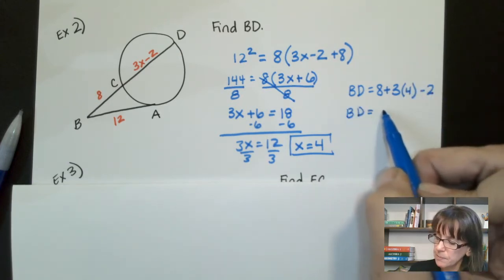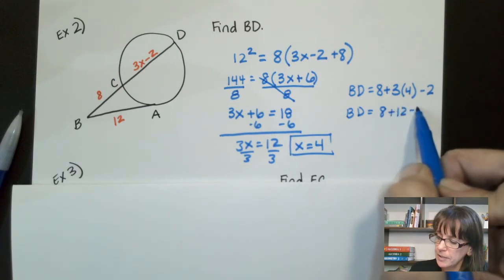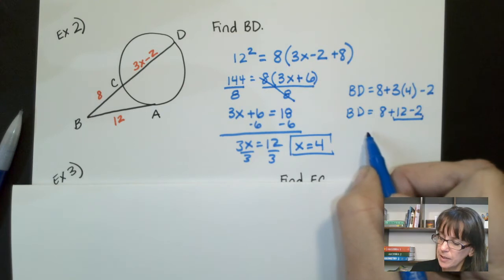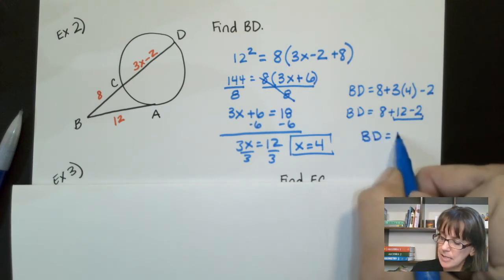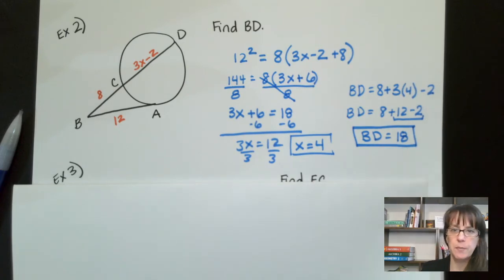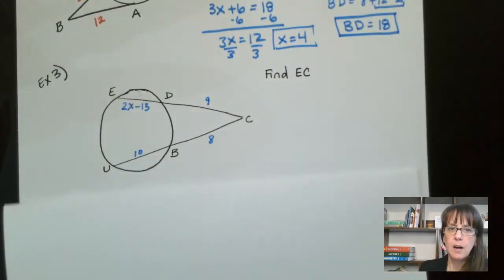So BD equals 3 plus 12 minus 2. And so that's going to be 10 right there. And so we get BD equals 18. So there is your correct answer. So always make sure to go back and read the question.